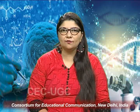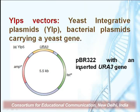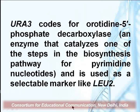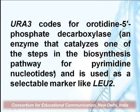YIPs, or yeast integrative plasmids, are bacterial plasmids carrying a yeast gene. They are again pBR322-based with an origin, but contain isolated yeast DNA such as the URA3 gene. As against YEPs which are episomal, these are integrative plasmids — they essentially integrate into the chromosome. URA3 codes for orotidine phosphate decarboxylase, an enzyme that catalyzes one of the steps in the biosynthesis pathway for pyrimidine nucleotides, and is used as a selectable marker just like leucine-2.